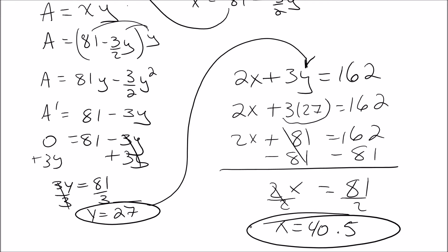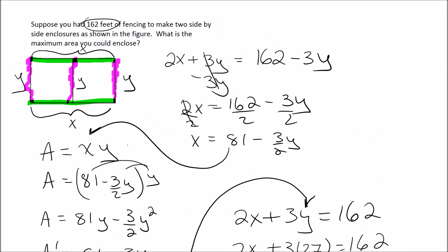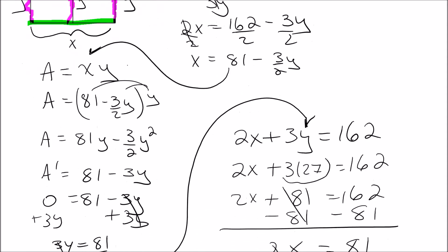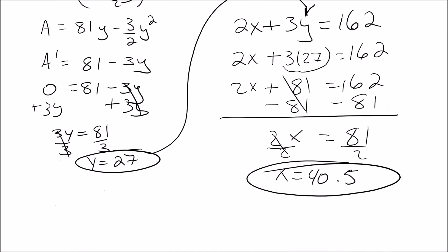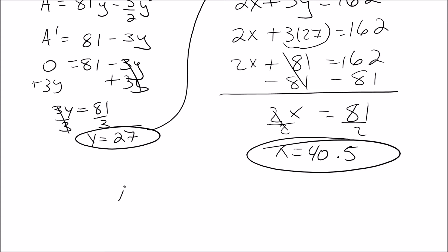So now that we have our X and Y value, the question wanted to know what is the maximum area you can enclose. The maximum area is just X times Y. So we're going to put Y in, put X in. So that area is 40.5 times 27.